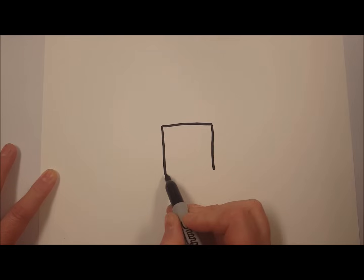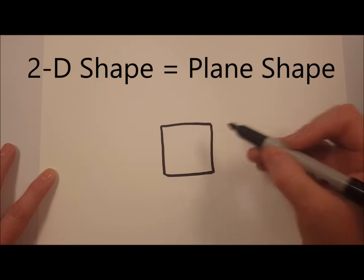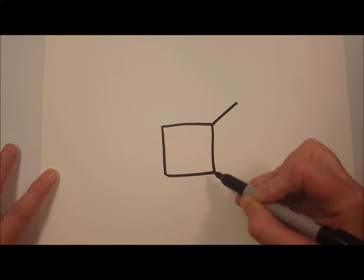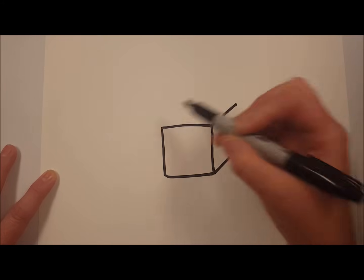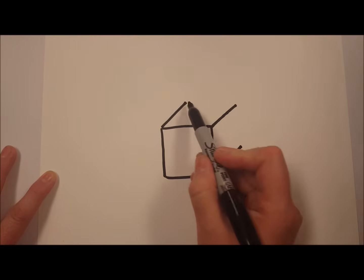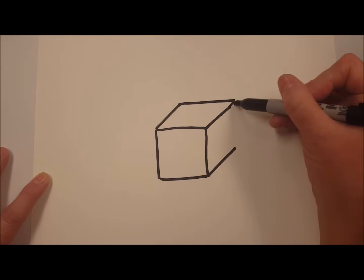A square is a flat or plane shape, also known as two-dimensional. Now to turn a square into something three-dimensional or a solid shape, you add a diagonal, diagonal, diagonal, and then you connect those lines with a horizontal line and a vertical line.